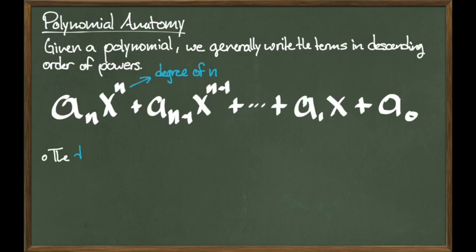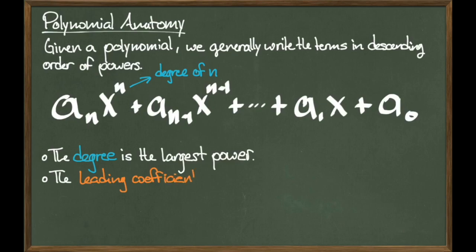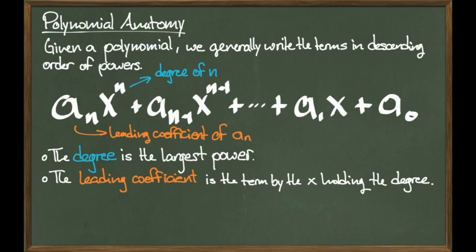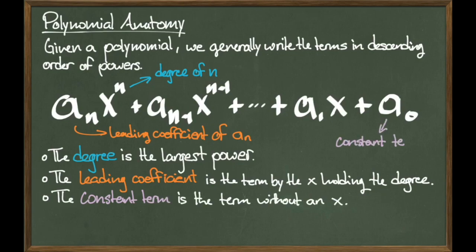The largest power has a name. We call it the degree. In this case, the degree of this polynomial is n. The corresponding coefficient is called the leading coefficient. In our case, the leading coefficient is a sub n. Lastly, we have the constant term. This is a number that does not have a power of X next to it. In our case, that's a sub 0.